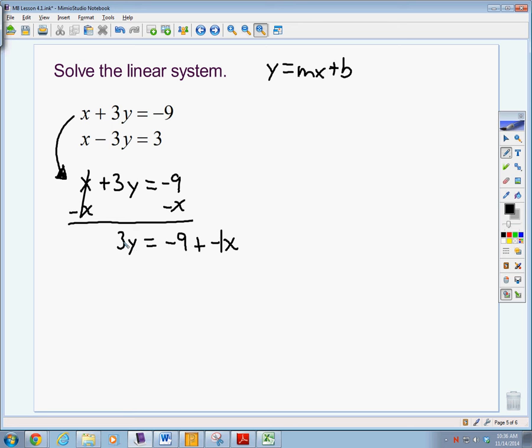Again, we're solving for y, so now we have to get rid of the 3. Since it's 3 times y, we do the inverse, we divide by 3. 3 divided by 3 is 1y. Now, this 3 is dividing both of these terms, and we want to break it up so we can put it in slope-intercept form.